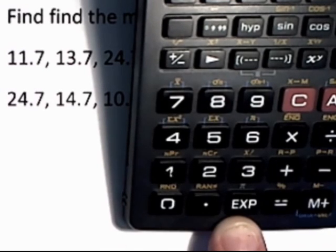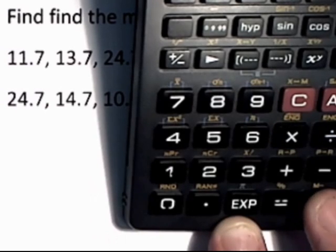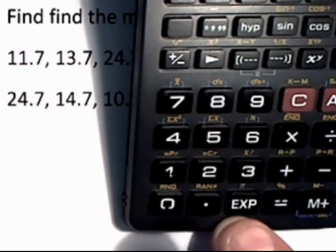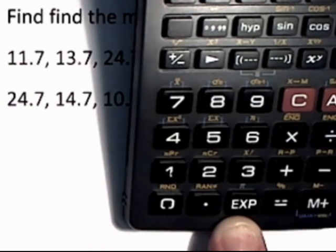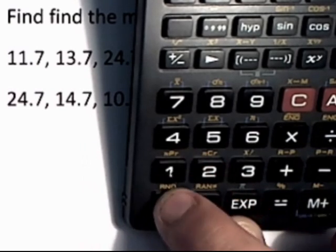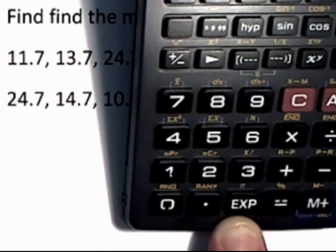The next one is 24.7, so you do 24.7, memory plus. Then 14.7, memory plus. And finally 10.7, and press memory plus. Now that puts the numbers in the data set within the calculator.